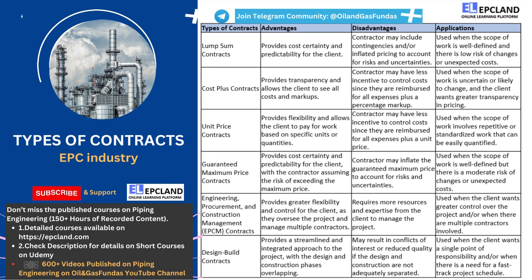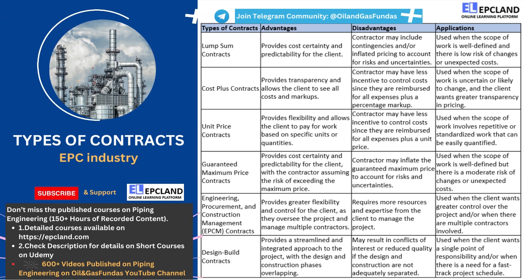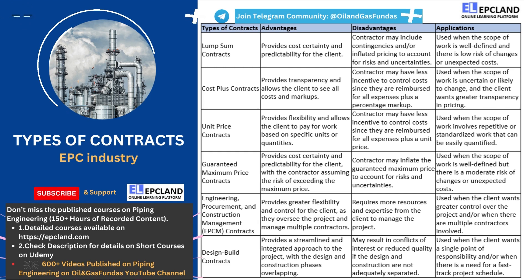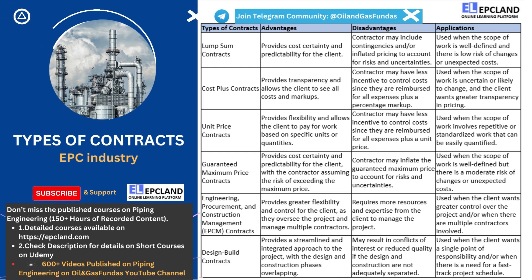Let's begin with the first one in the table. Lump sum contracts are a type of contract commonly used in the engineering, procurement, and construction industry. They are typically used when the scope of work is well defined and there is low risk of changes or unexpected costs. One of the main advantages of a lump sum contract is that it provides cost certainty and predictability for the client. With a lump sum contract, the client knows exactly how much they will be paying for the project and can budget accordingly.